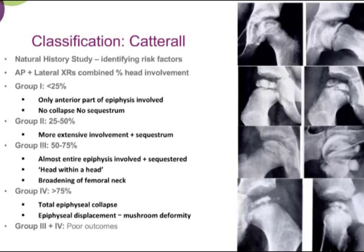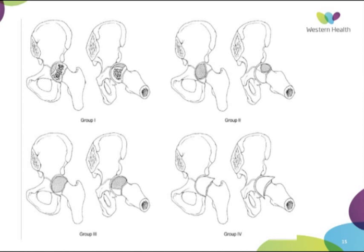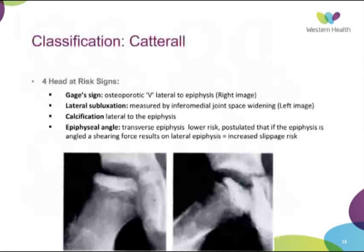The Catterall classification uses AP and lateral x-rays to determine the percentage of the head involved, with four groups ranging from less than 25% to 100% involvement. Groups one through four represent progressive head involvement — from only part of the head involved with less than 25%, to complete collapse and deformity. Groups three and four are associated with very poor outcomes.